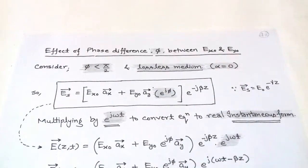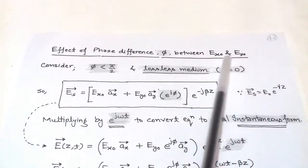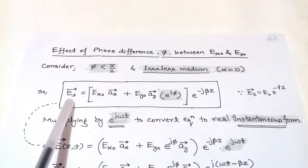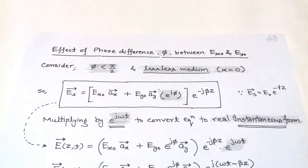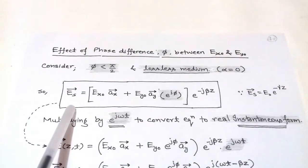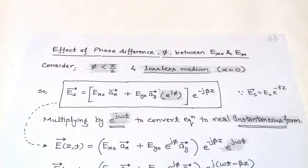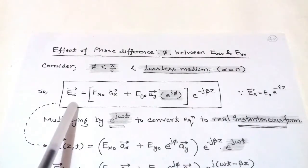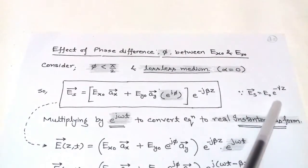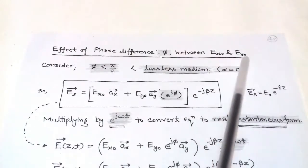The topic is the effect of phase difference φ between Ex₀ and Ey₀. Here Ex₀ and Ey₀ are the components of the electric field, and in the polarization of a wave we require only the electric field. The electric field phasor is given by Es vector equals E₀ times e^(−γz), where γ equals α + jβ, and E₀ has two components: Ex₀ unit vector X and Ey₀ unit vector Y.